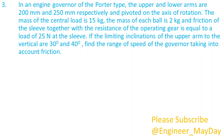Here is a third question. In an engine governor of the Porter type, the upper and lower arms are 200 millimeters and 250 millimeters respectively and pivoted on the axis of rotation. The mass of the central load is 15 kilograms, the mass of each ball is 2 kilograms and friction of the sleeve together with the resistance of the operating gear is equal to a load of 25 Newtons at the sleeve. If the limiting inclinations of the upper arm to the vertical are 30 degrees and 40 degrees, find the range of speed of the governor taking into account friction.